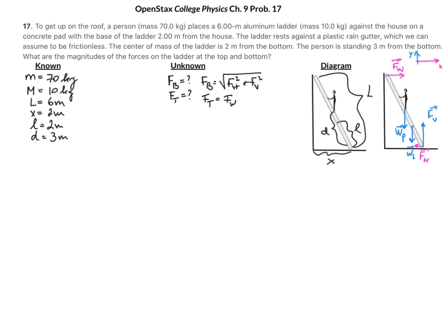The ladder is in equilibrium, which means the sum of the forces in the x and y directions are zero. In the x direction I only have two forces — the force from the wall and the horizontal friction force — so their sum is zero. In the y direction I have three forces: the upward vertical force, the weight of the person, and the weight of the ladder. I can't get much information from just these equations because I have too many unknowns, so I need a third equation: the sum of the torques.